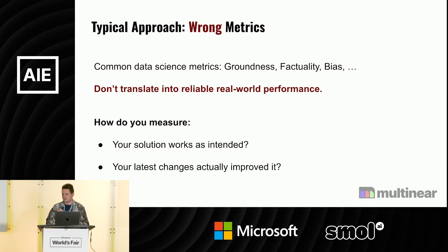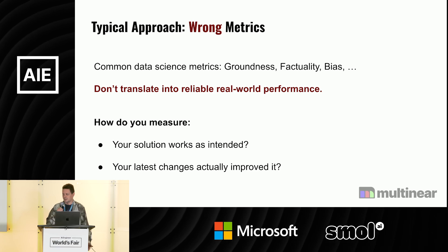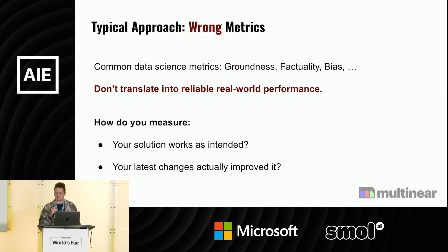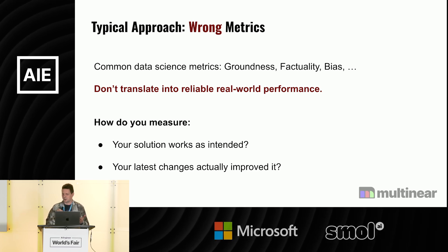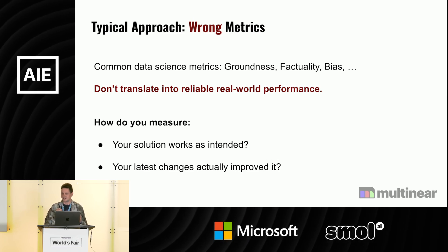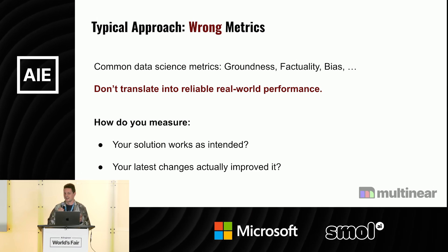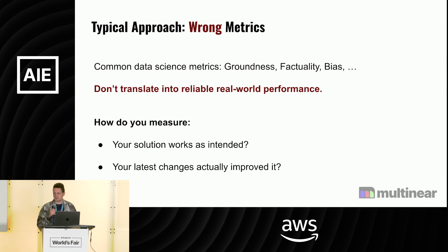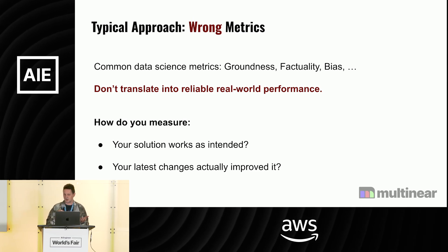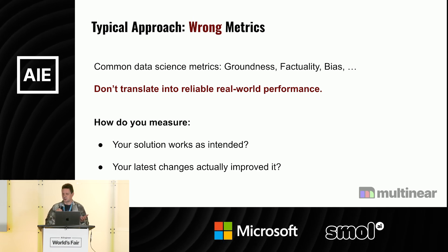For example, I was talking to an ex-colleague who is building a customer support bot at Wix. I asked him how he knows that his solution is working well, and he started talking about factuality and other data science metrics. When I dug deeper, we figured out together that the most important metric for them is the rate of escalation — moving from the AI support bot to a human support agent. If your solution isn't able to answer the user — it could be super grounded — but still not provide the right answer the user expects. And this is what you actually need to test.